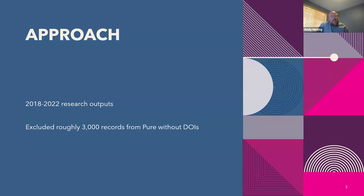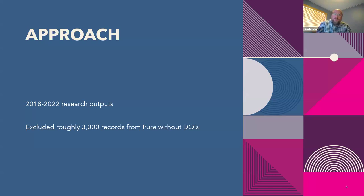The approach I took was to look at publications and research outputs from Pure for a five-year period and do the same from OpenAlex — what would I learn? I used not the OpenAlex API but their new interface, did some searching, and exported that data into Excel. I excluded about 3,000 records from Pure that did not have DOIs, and I matched records using DOIs.